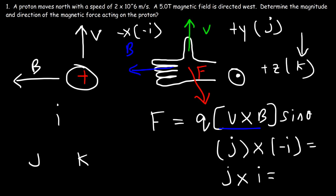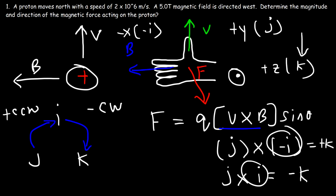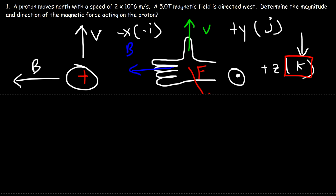We take the cross product of positive J and I, going from J toward I. The cross product of J and I is K — if traveling clockwise it's negative K, if counterclockwise it's positive K. Since we're going clockwise, J × I = negative K. Therefore J × (−I) = positive K, because the negative sign flips the result. This confirms that the force is in the positive Z direction, coming out of the page.